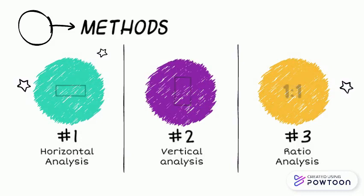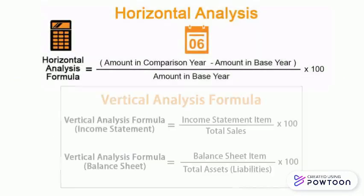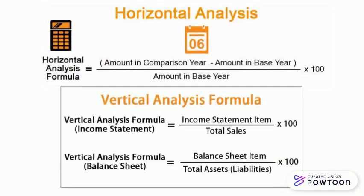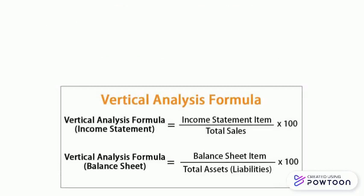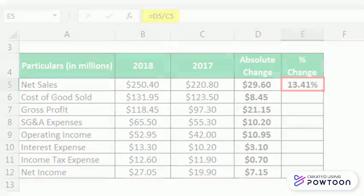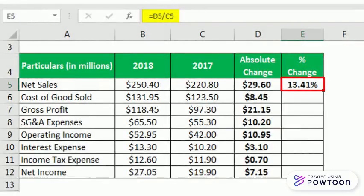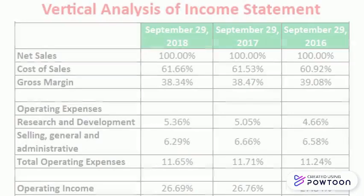The first place to start in analysing a cash receivable is horizontal analysis. Horizontal analysis calculates the dollar change in an account balance, defined as the current year balance minus the previous year's balance, then dividing that change by the previous year's balance to yield the percentage change.